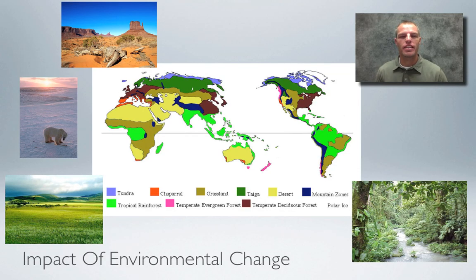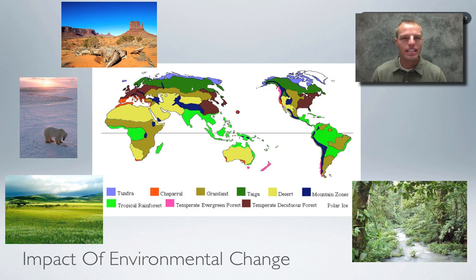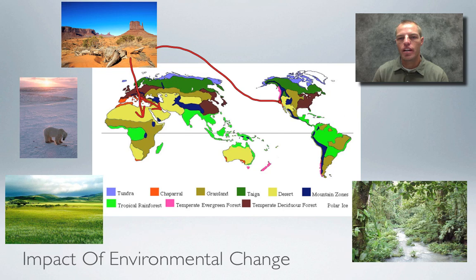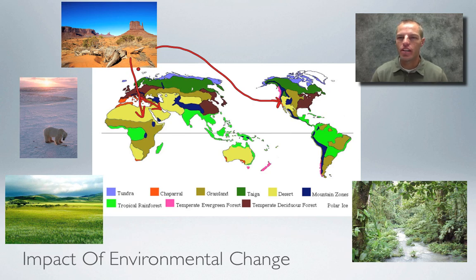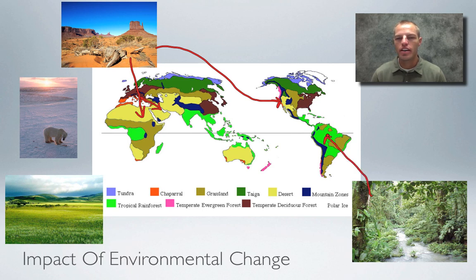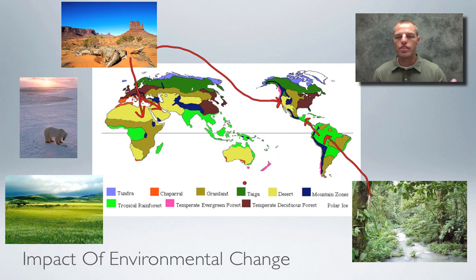This screencast looks at the impact of environmental change. Our globe is broken up into different environments called biomes, which are very unique. The desert is found in areas like North Africa, the Middle East, and the western United States like Nevada and Arizona. The rainforest is found in South America, Central America, India, and Africa. These biomes are very unique.